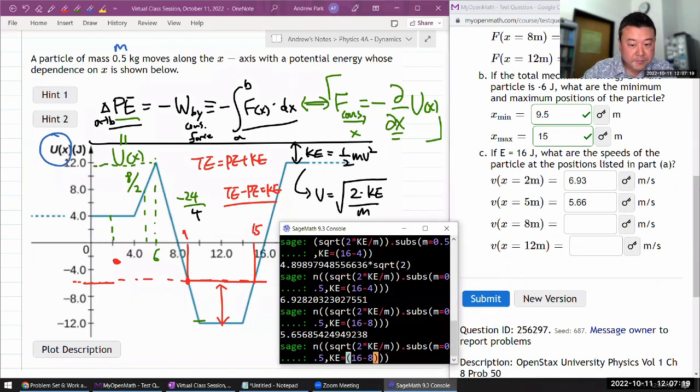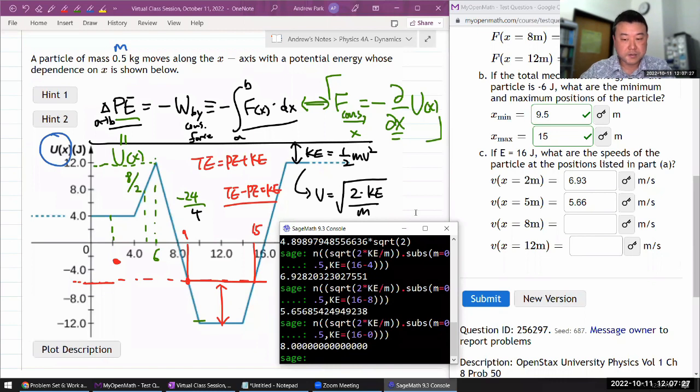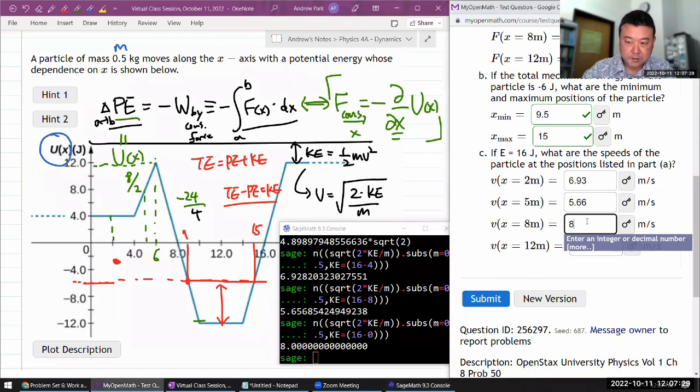At x equals 8, my potential energy is 0, so all of the total energy, 16 joules, becomes my kinetic. So 8.